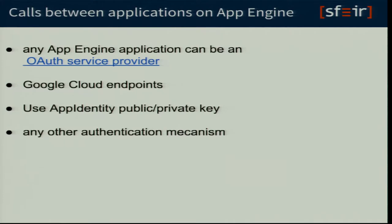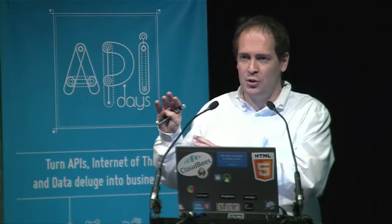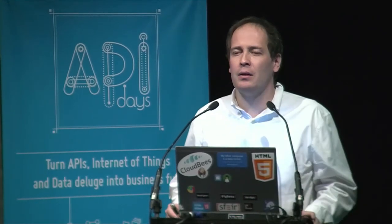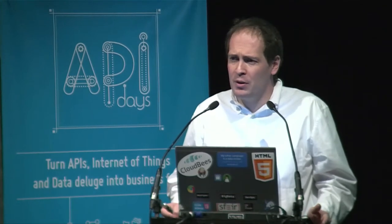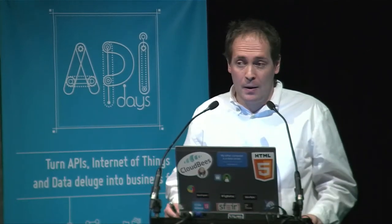Now let's talk about how to secure communication between Google App Engine applications. There are several options. Google is pushing OAuth2 strongly, and you can make any App Engine application an OAuth service provider. Implementing the server part is actually pretty hard — I've tried it before, just don't try it, let Google do it. That's why they created Google Cloud Endpoints, which is targeted toward mobile applications and packages all of this much more easily.